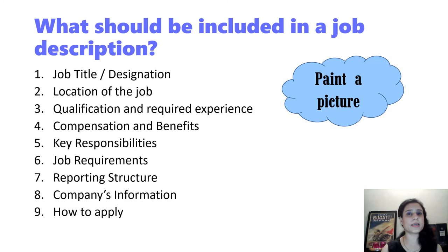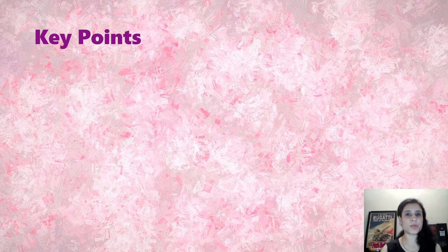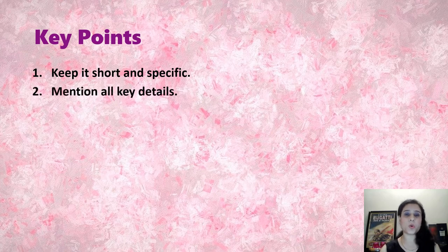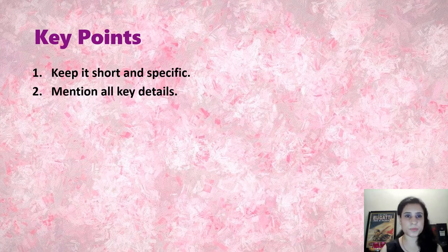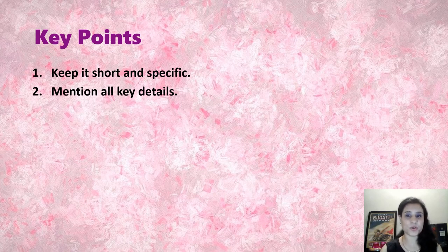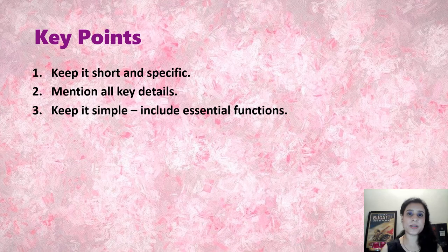All of this will give the candidate an idea about what working here will look like, what kind of job they can expect, and what kind of life they will have — it helps you paint a picture of the entire job. Now, keep it short and specific. Mention all key details, but put the information in bullet points. There is no need to write three to four pages of a job description because nobody has the time to go through such a lengthy document, and even if you do, there is no guarantee candidates will read the entire thing. Keep it simple and include essential functions.